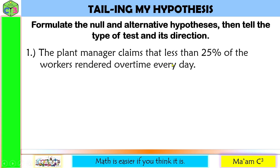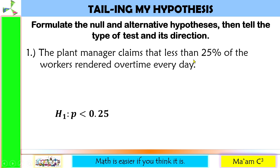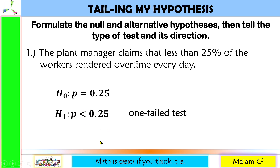The plant manager claims that less than 25% of the workers rendered overtime every day. We have here less than 25%. When we say less than, this is one-tailed and this goes to our alternative hypothesis. So we have H₁: P is less than 0.25. Our null hypothesis will be H₀: P is equal to 0.25. Since this uses less than, this is a one-tailed test, particularly left-tailed.